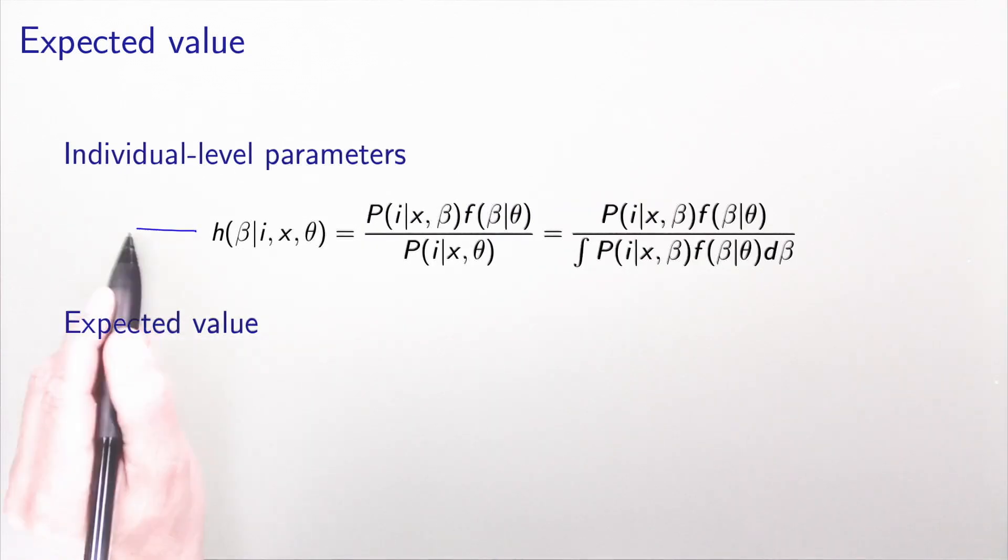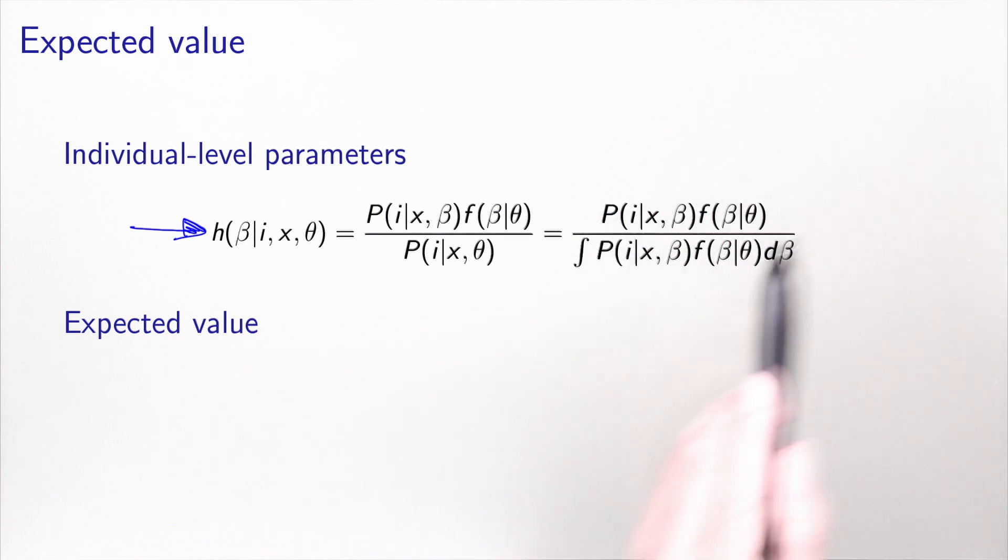So this is the definition of the density of beta given i and x that we derived in the previous slide using Bayes' theorem. And as we discussed in the numerator, we have the kernel, the logit model, multiplied by the density, which is normalized by the choice probability.